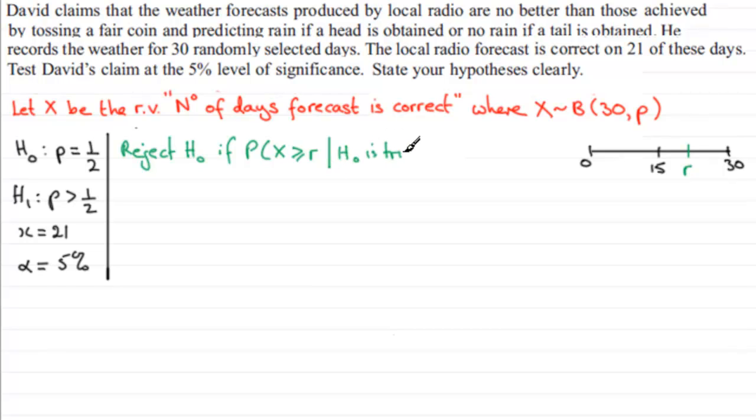This would only change if I had a critical value which was lower than 15. I would change this to the probability X is less than or equal to R given that H₀ is true, turns out to be less than the significance level. But for this one, we're looking at what we call an upper tail, so probability X is greater than or equal to that critical value.